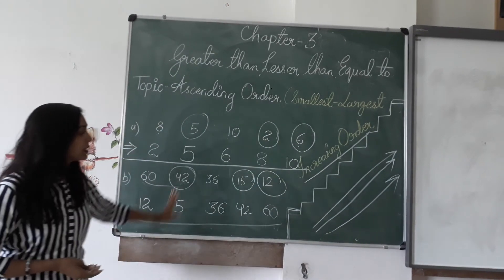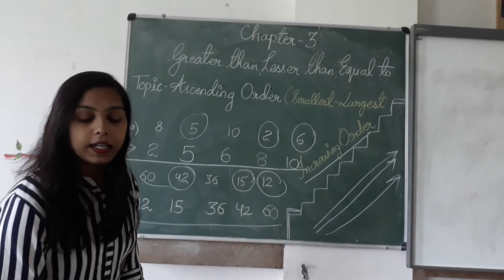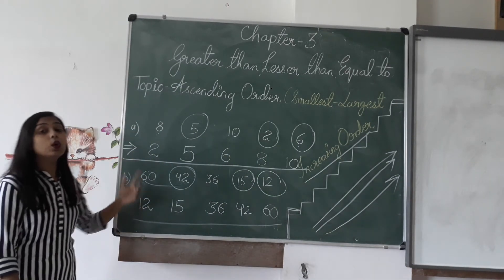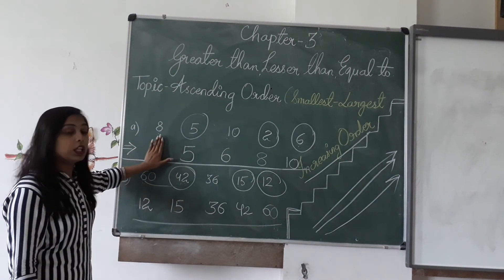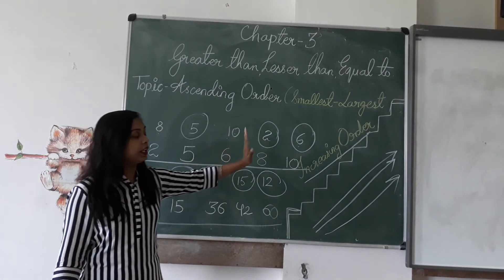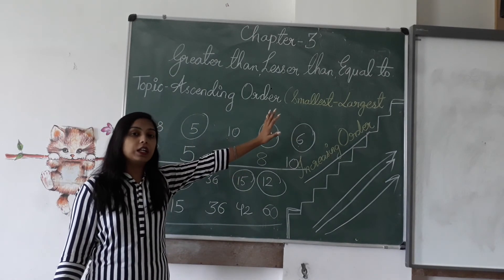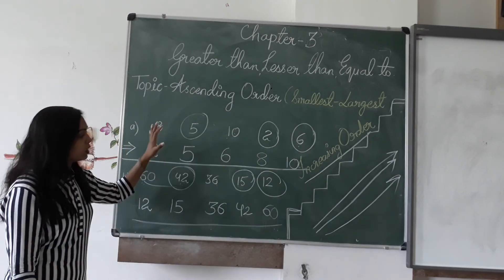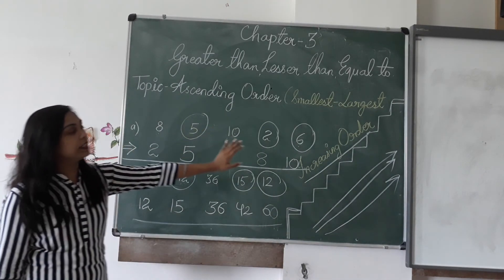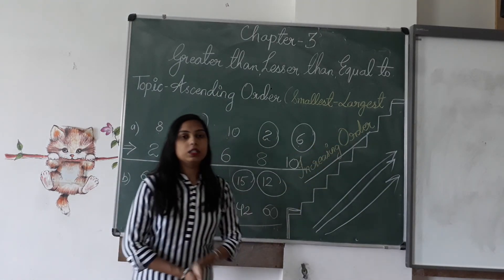I think you have understood ascending order. Ascending means chhote se bada — from smallest to largest. First we put the smallest, then a little bit greater, greater, greater, and at the last the highest number. So ascending order means smallest to largest, which means increasing order.